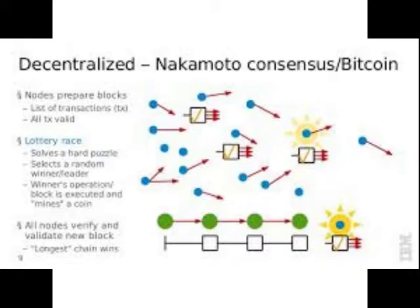Think of double spending, spam attacks, DOS attacks, malicious nodes, miners deliberately doing empty blocks, orphan blocks, or false blocks — any kind of malicious activity. The solution that Satoshi Nakamoto came up with — and he utilized it from a different system called proof-of-work — is to combat this.